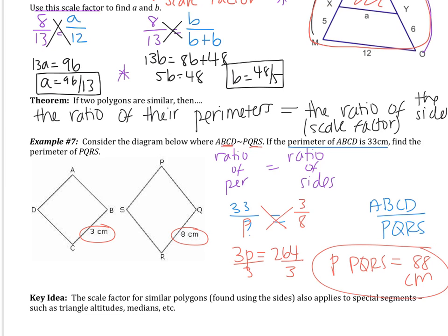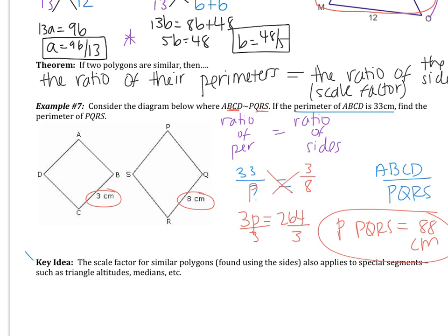The key idea: the scale factor — that ratio of the sides — applies to special segments too. The ratio is the same for the sides, the same for the perimeters, and the same for special segments like altitudes, medians, and angle bisectors. You're going to see that in classwork — sometimes you'll have to set up a ratio involving those special triangle segments.